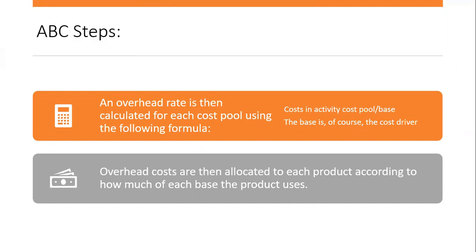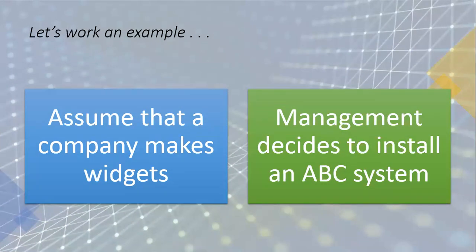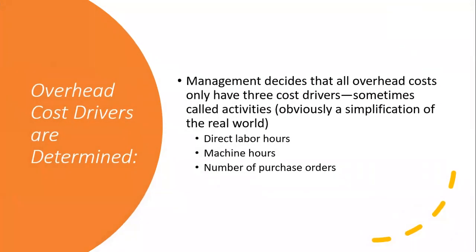Let's work through an example. Assume a company makes widgets and management decides to install an ABC system. Step one: identify overhead cost drivers. Management decides that all overhead costs have three cost drivers — direct labor hours, machine hours, and number of purchase orders. This is a simplification of the real world.